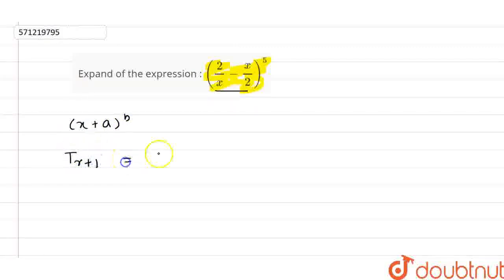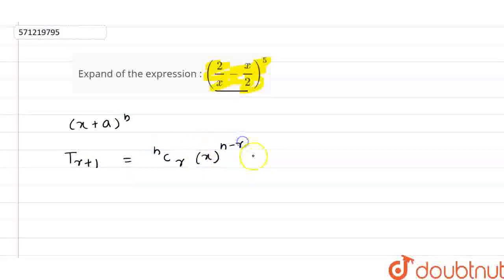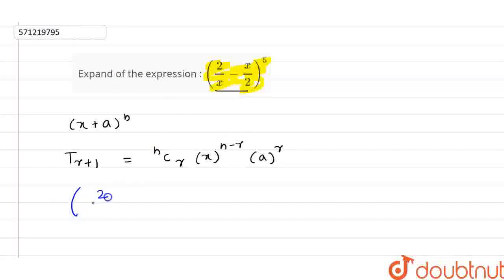The (r+1)th term is equal to nCr times x raised to the power (n minus r) into a raised to the power r. So, we have (2y/x minus x/y²) whole raised to the power 5.